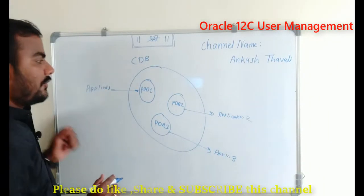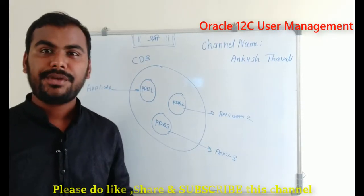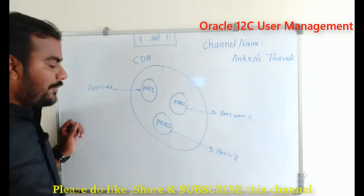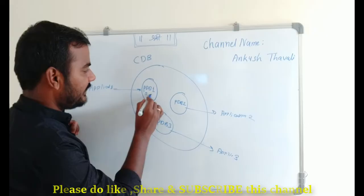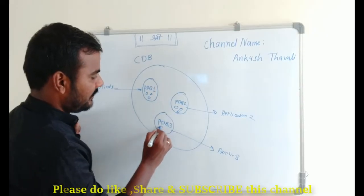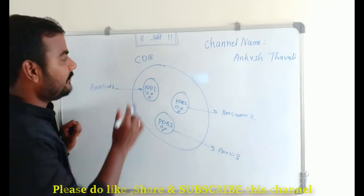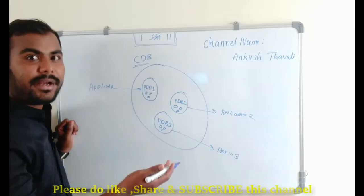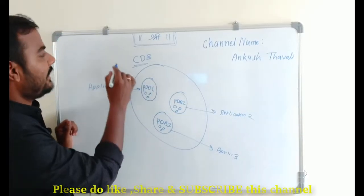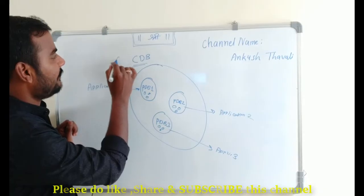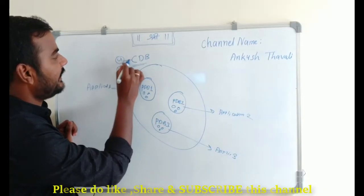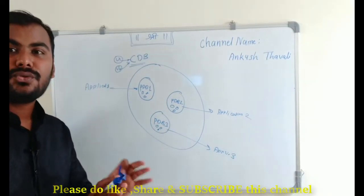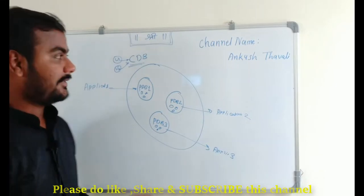For each application we need some users who will do the administration of that particular database or application. So we can have users available inside each pluggable database. We also need some users which are created automatically, and we can also create them manually inside the container database. If you look at this structure, you will find there are two kinds of users in Oracle 12c.